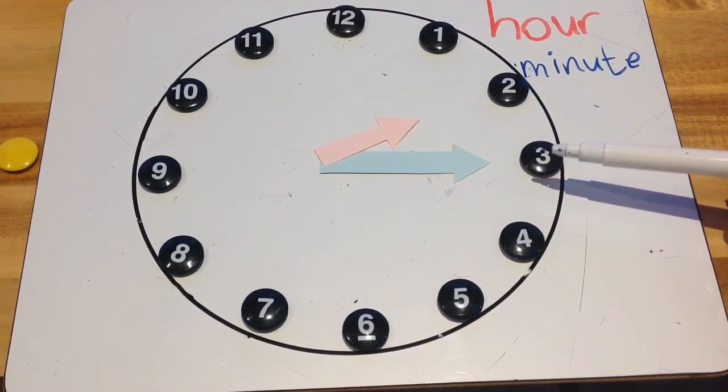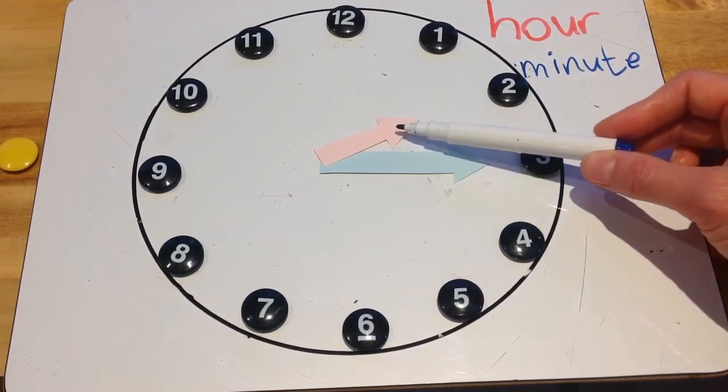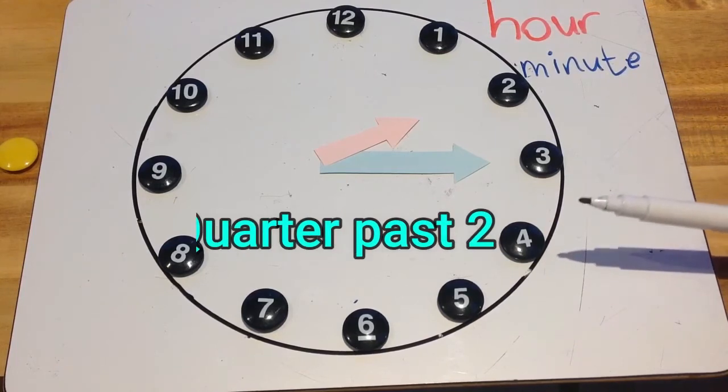It's a quarter past the hour. So the minutes are a quarter past, and the hour hand is still pointing at the 2. So that means it's a quarter past 2.